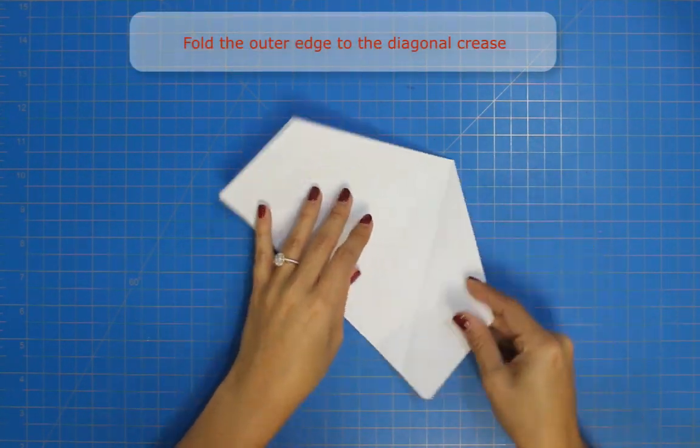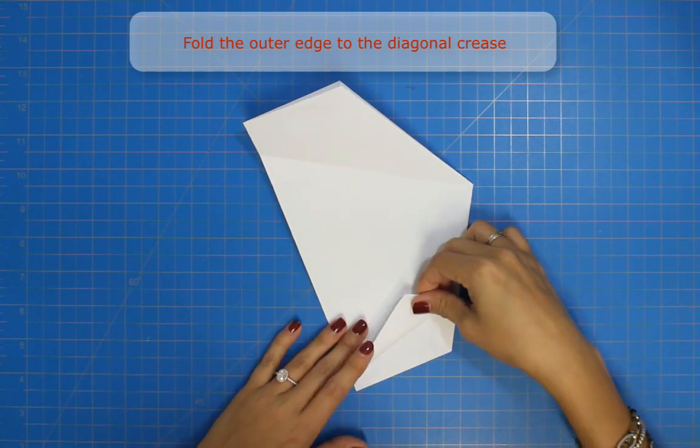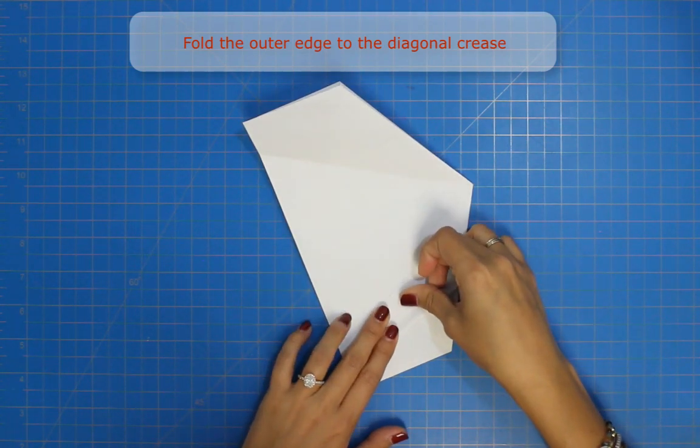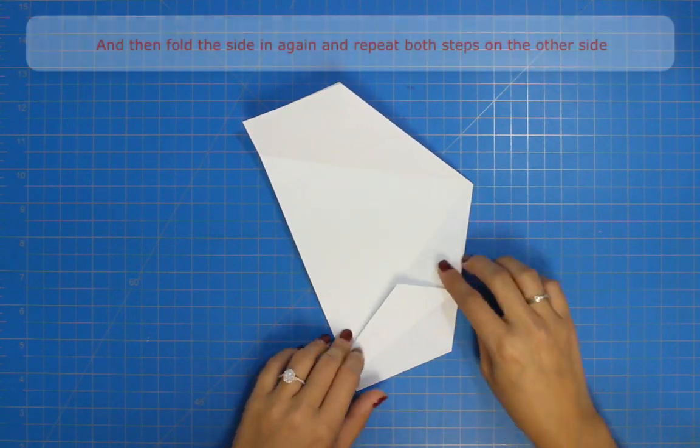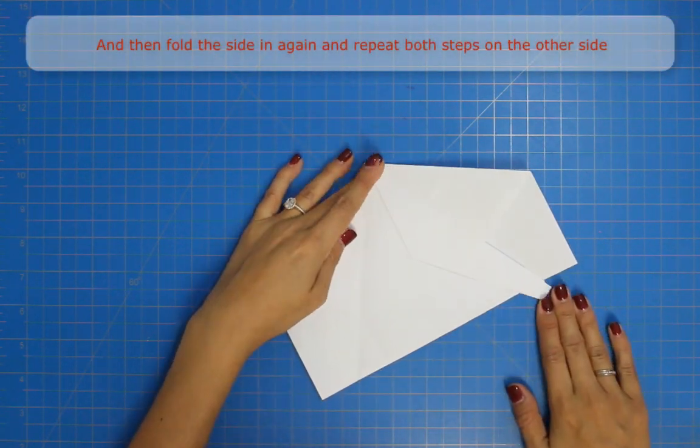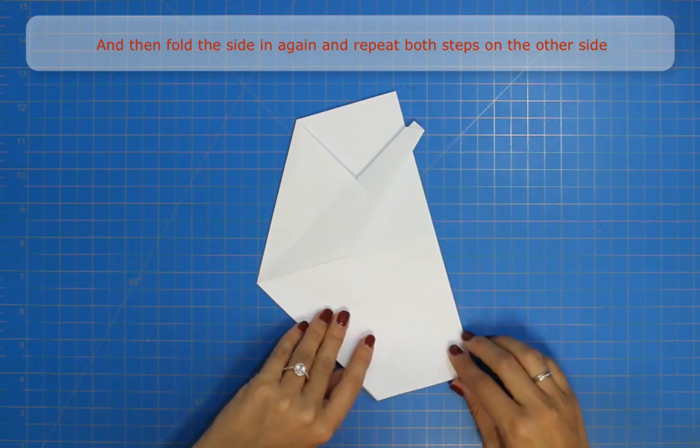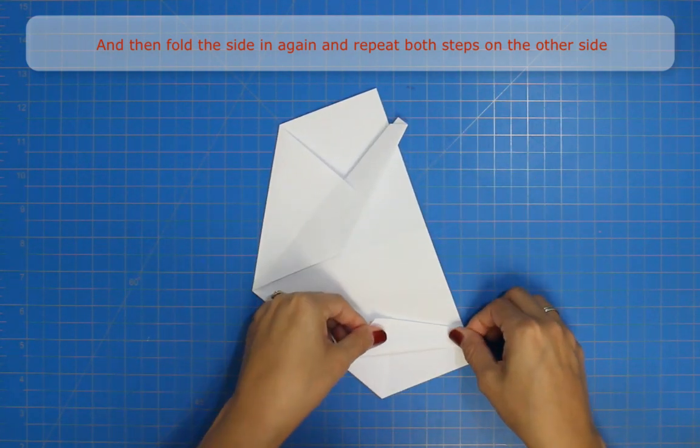Fold the outer edge to the diagonal crease. And then fold it in again to the center. Repeat both steps on the other side.